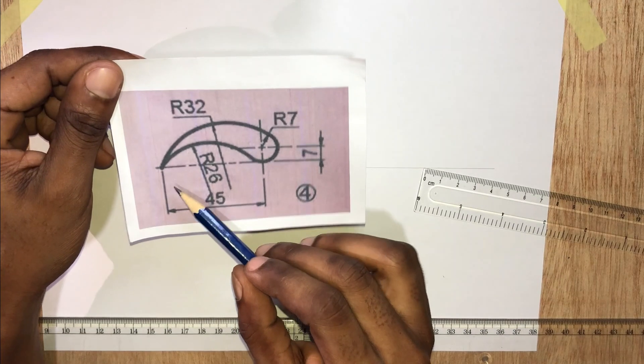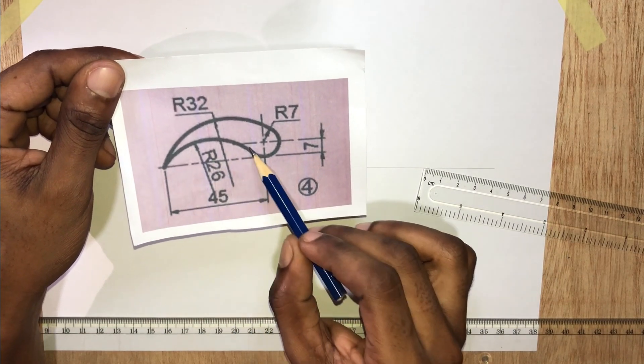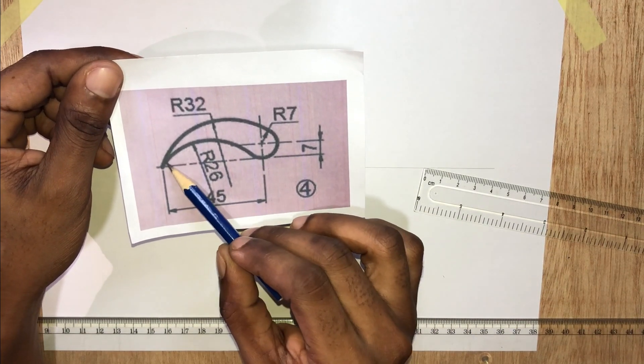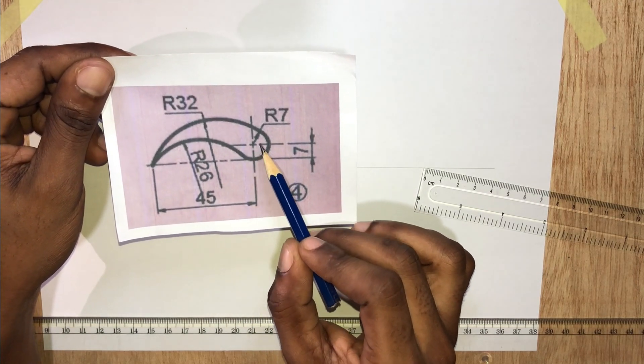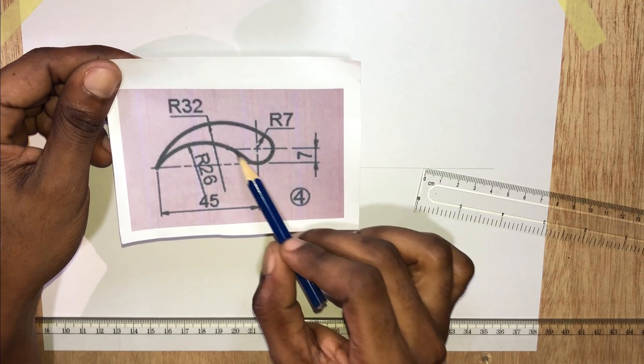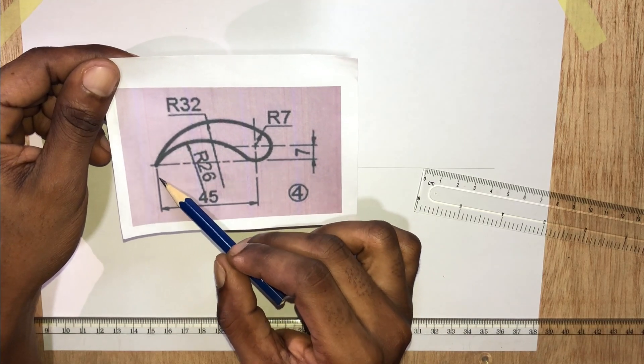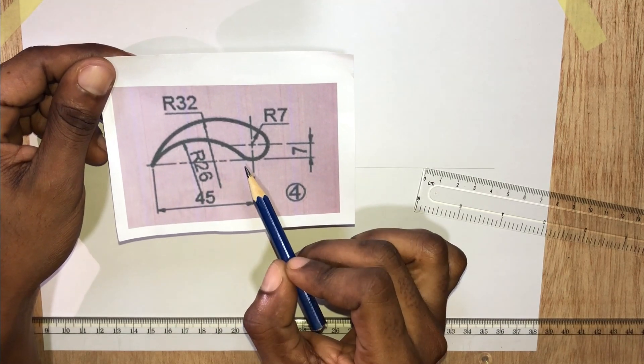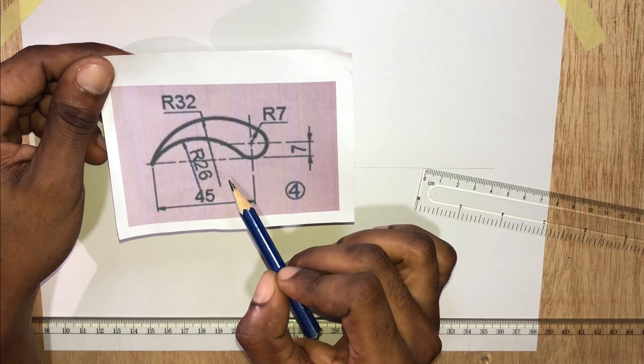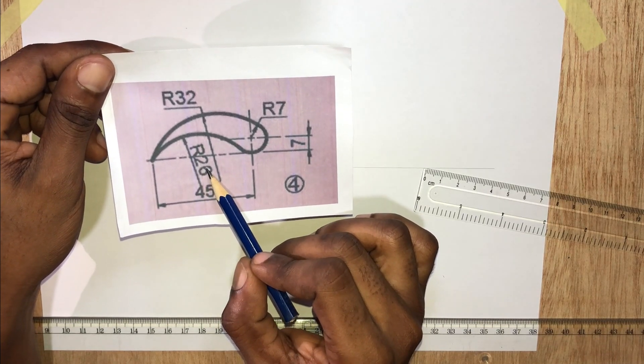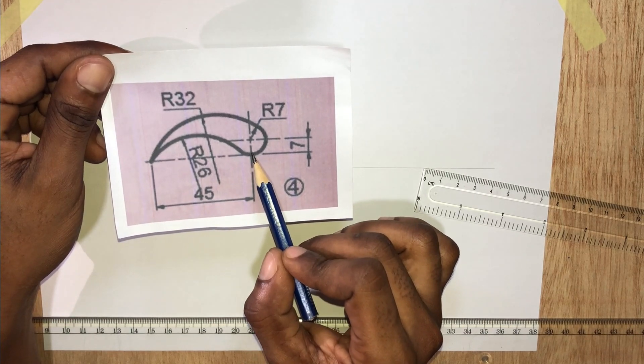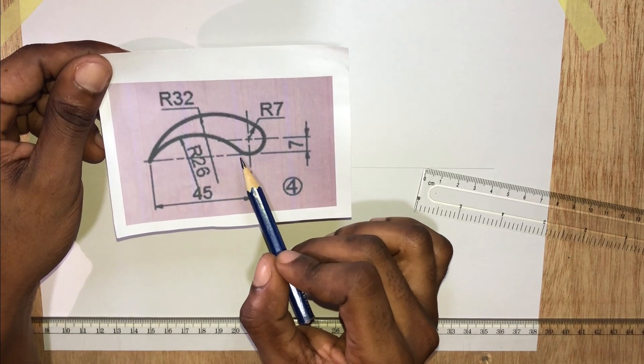Let's draw the last circle. Now this is that last circle. It is external to the small circle and also passes through point A. External tangency, so we add the radii. 26 millimeters plus 7 millimeters should give us 33 millimeters.